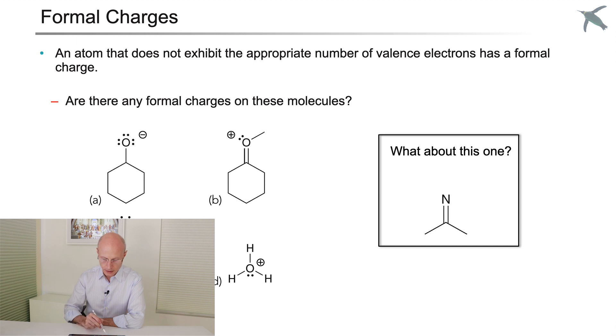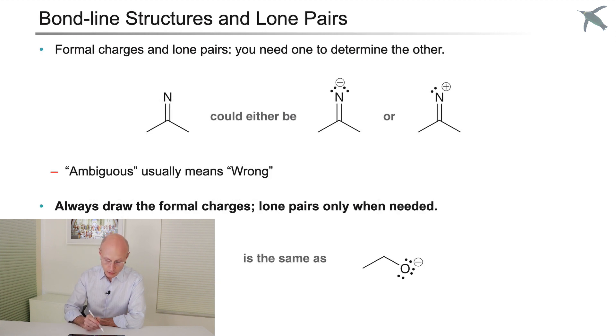What about this structure? Does it have any formal charge? Does it have any lone pair? You can't tell. This is ambiguous, because it could either be this species with two lone pairs and therefore a negative charge, or it could be this species with only one lone pair and therefore a positive charge. Ambiguous usually means wrong. You have to specify one of the two. You need the formal charges in order to compute the number of lone pairs and you need the lone pairs in order to compute the formal charge. You need one to determine the other.